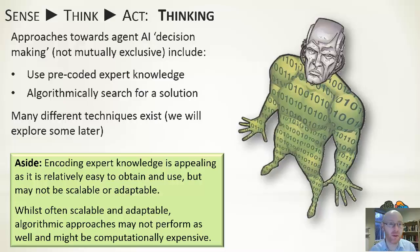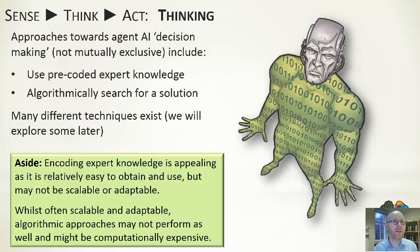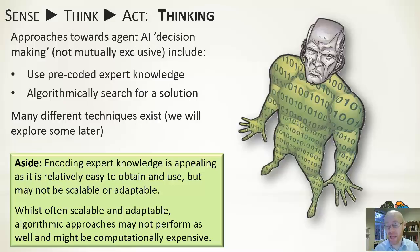We're going to spend the next few lectures looking at different techniques that can be used to reason about the environment that the AI entity finds itself within. For things like expert knowledge, the information is readily available, but it can be a little brittle — it's tied into situation matching and hoping the advice applies to all common situations. For the algorithmic approach, it can be more flexible, more scalable, and potentially more adaptable. But it can sometimes be more challenging to get behaviours that come across as representing high-quality reasoning or high-quality thinking.